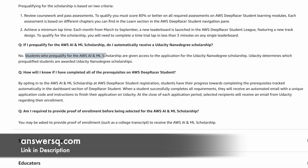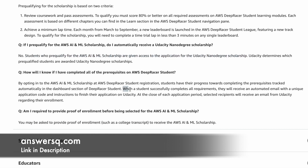Students who pre-qualify for the AWS AI and ML scholarship will be given access to the application for the Udacity nano degree scholarship program — not the scholarship itself, but the application access. Udacity will then select those 2000 students based on various parameters. Once you complete everything properly in the AWS DeepRacer student platform, you will receive an automated email with a unique application code and instructions to fill the application for the scholarship program on Udacity.